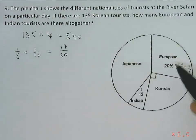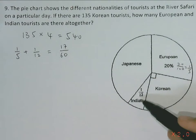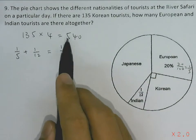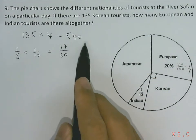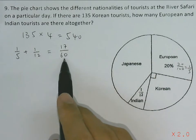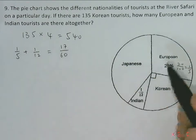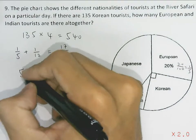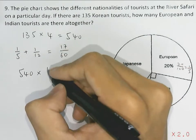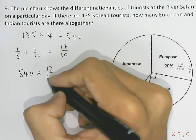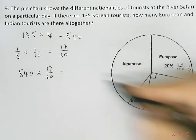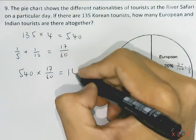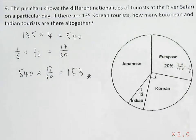17 over 60 of all the tourists belong to the European and Indian group. Since the total number of tourists is 540 and 17 out of 60 of them are European and Indian, we take 540 multiplied by 17 over 60, which gives us the answer of 153 tourists.